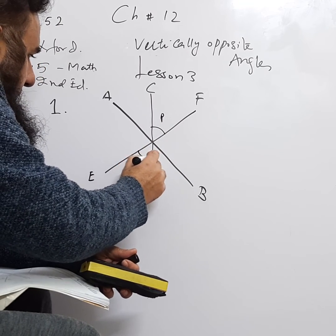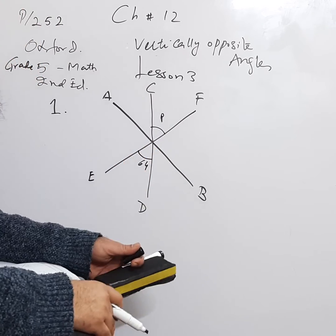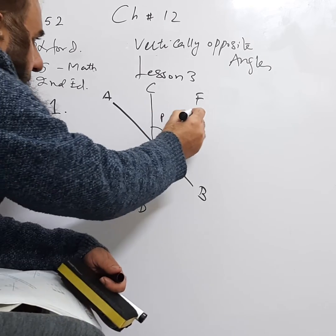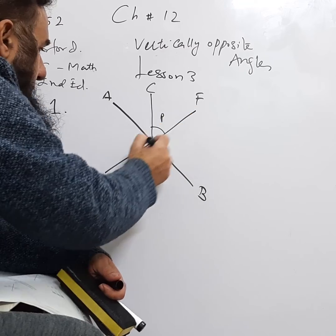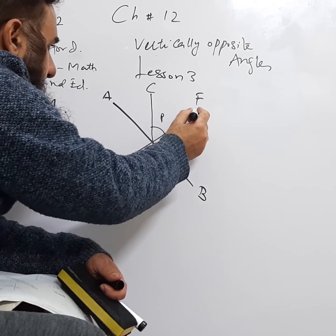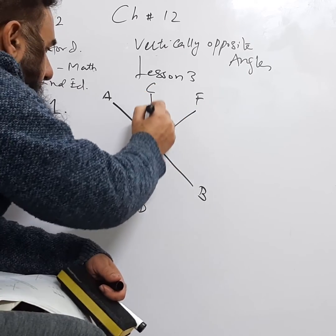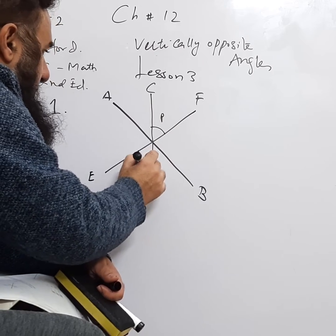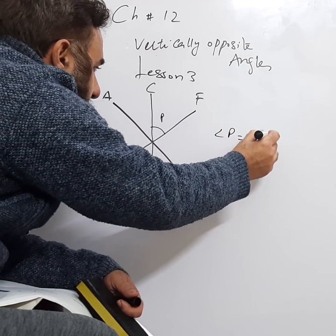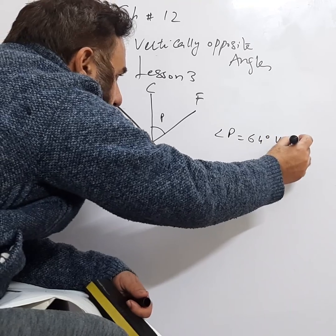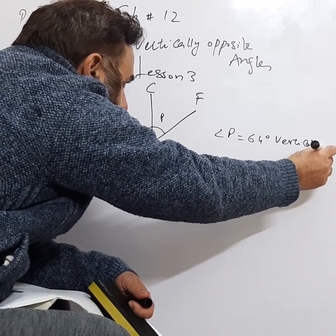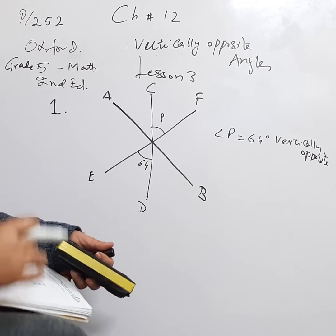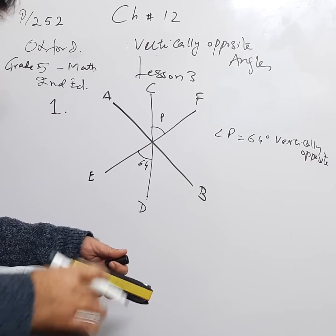From here we can see that this is EF and this is CD. These are two straight lines and these are making an X from here, like this, here, like this. These are making an X. 64 is equal to P. Angle P is equal to 64. Why? Because these are vertically opposite angles.